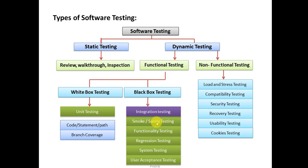Smoke testing and sanity testing are both ways of checking the critical functionality of your application. When a website is given to the tester, they first perform critical checks rather than testing everything. They check whether the URL is accessible, whether they can register or log in, and whether they can make payments — because other functionalities depend on these base behaviors working correctly.